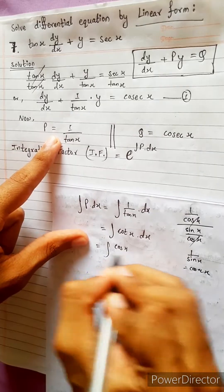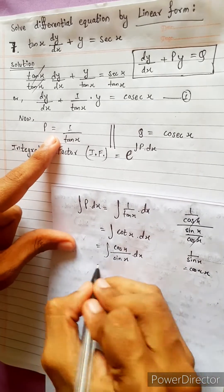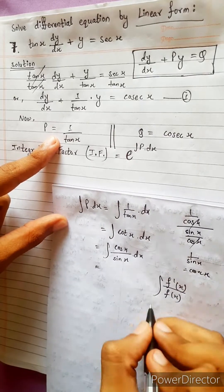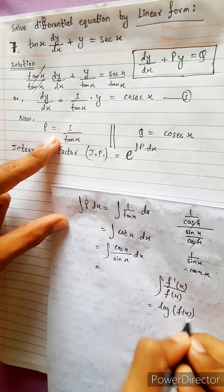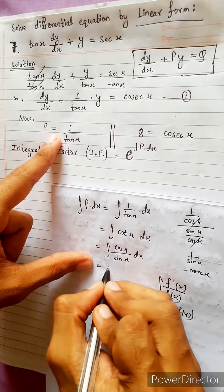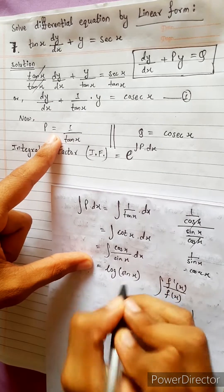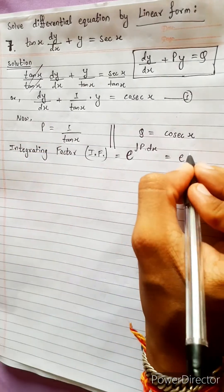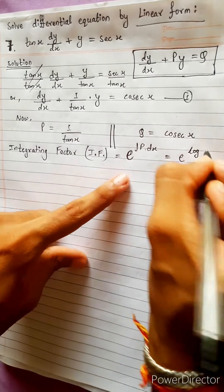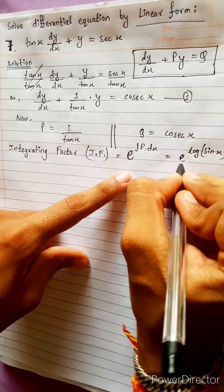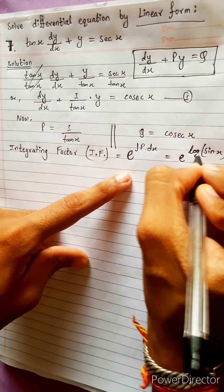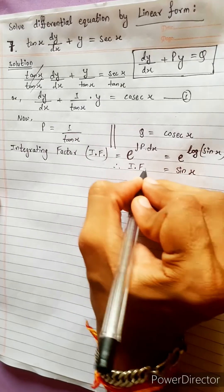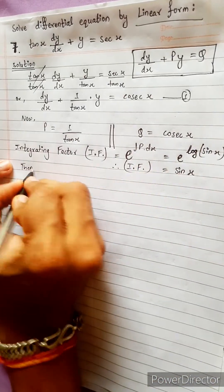And cot x equals cos x / sin x. Using the formula f'(x)/f(x) — this formula gives log f(x). So integration of P dx equals log sin x, because sin x derivative is cos x.